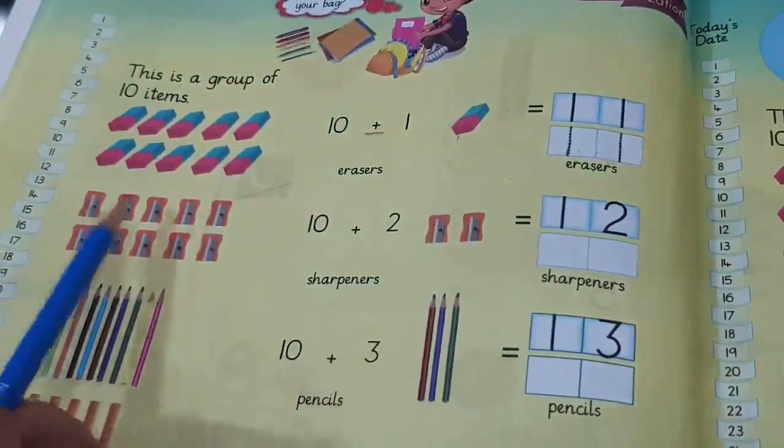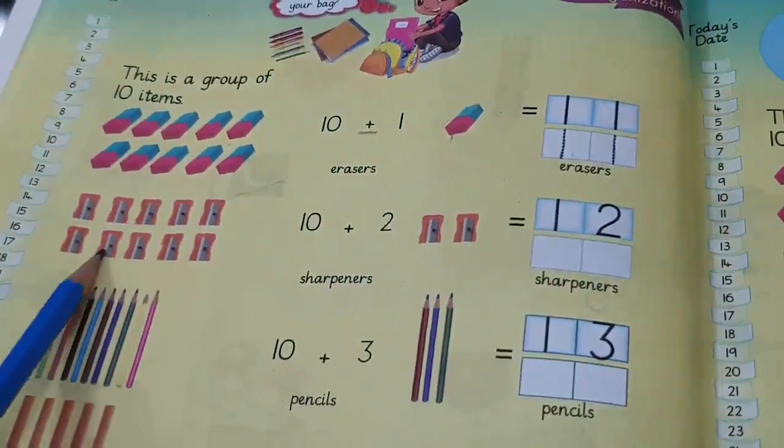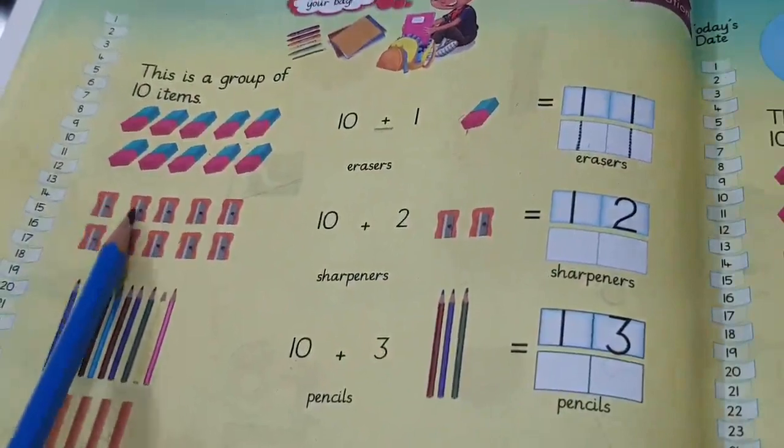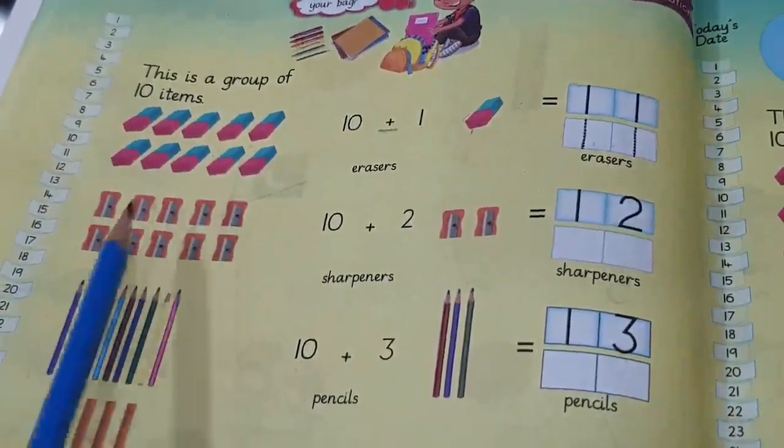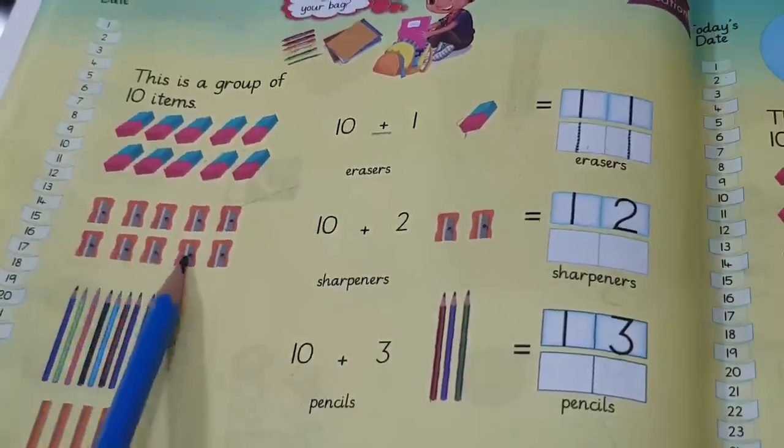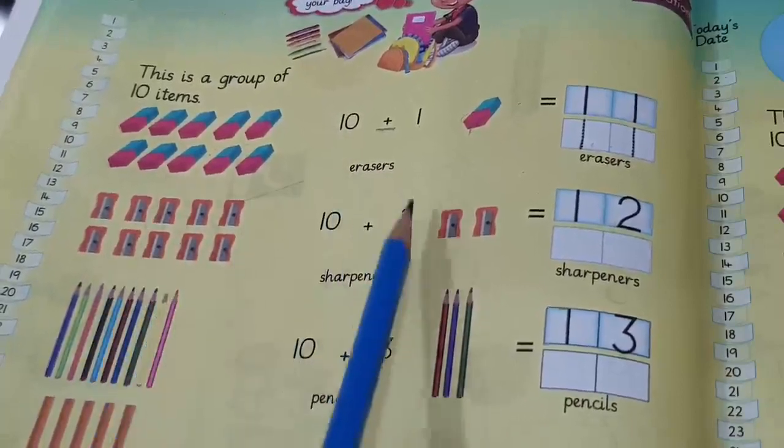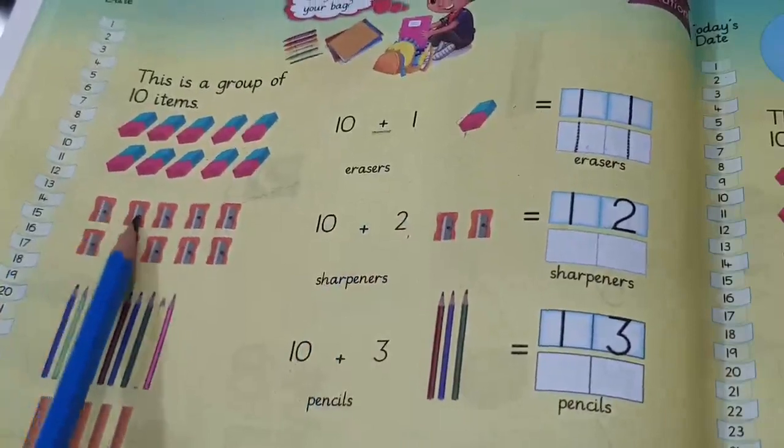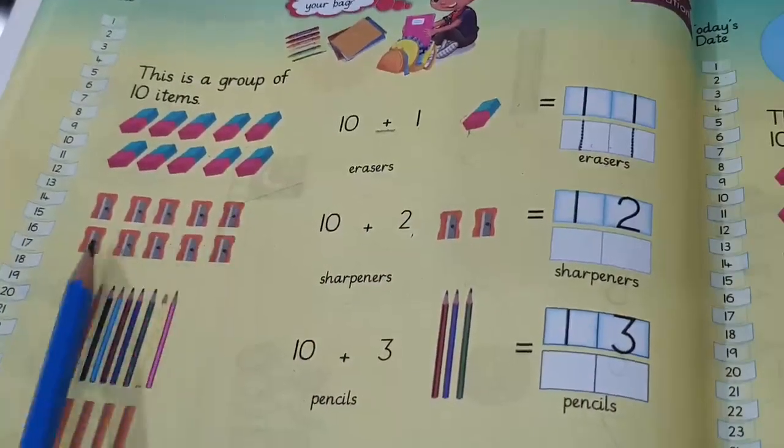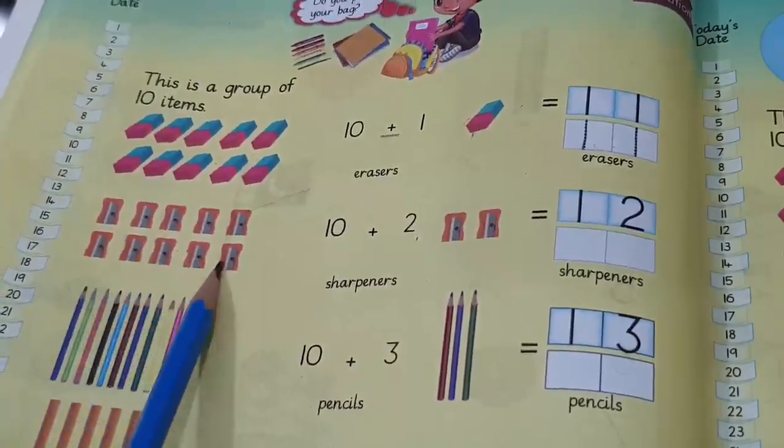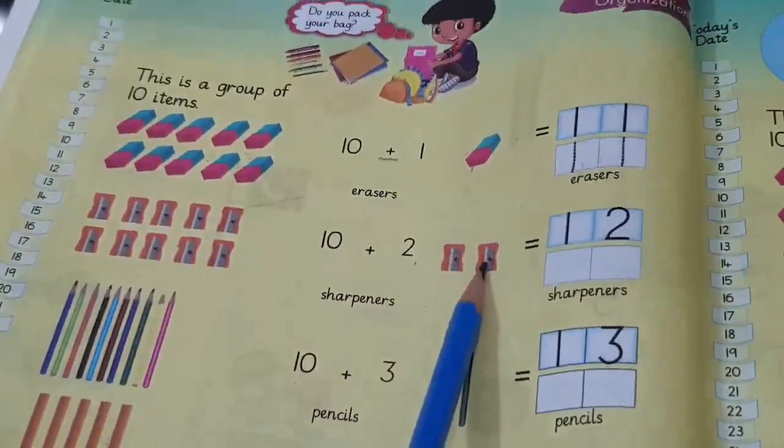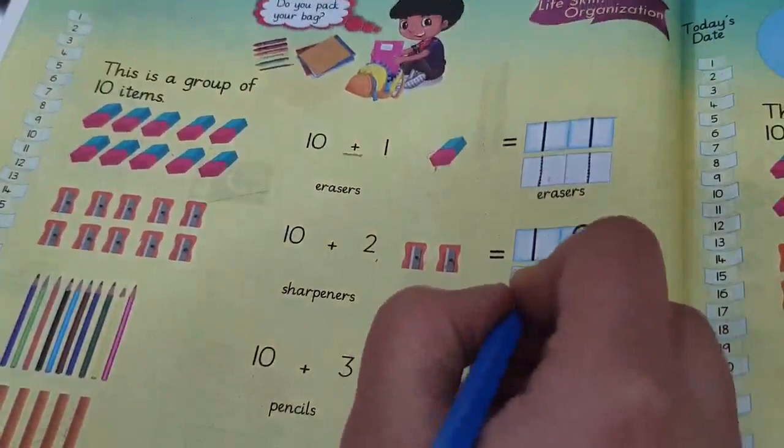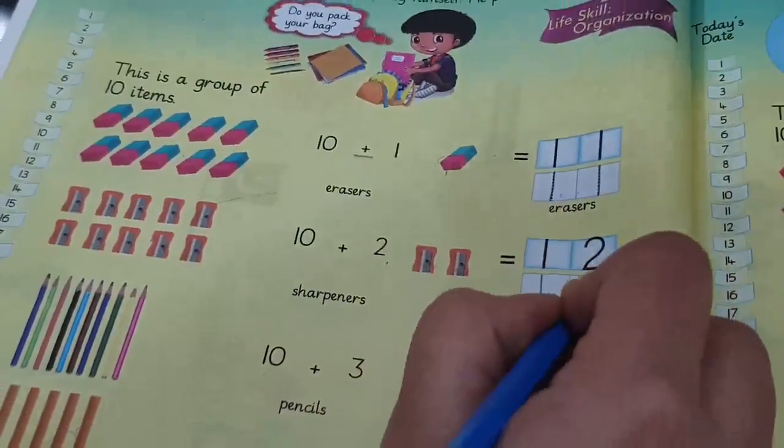Moving to next, what is this? These are sharpeners, orange sharpeners. Let's count with me. One, two, three, four, five, six, seven, eight, nine, ten. Ten sharpeners. Let me give you two more sharpeners. So, let's count together. One, two, three, four, five, six, seven, eight, nine, ten, 11 and 12. Now, we are having 12 sharpeners. Let's write here 12 sharpeners.